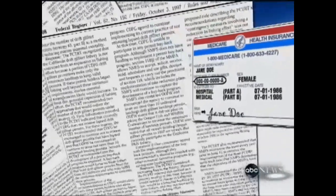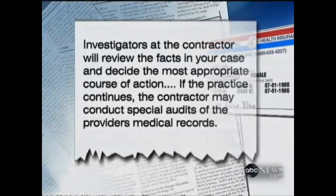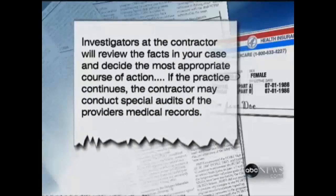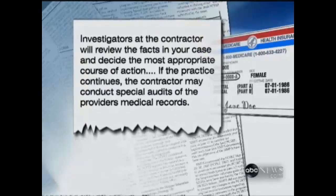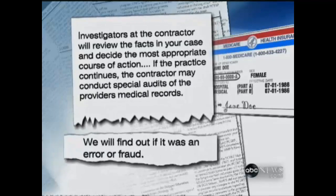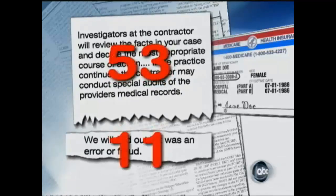The ABC News segment notes the problem has existed since the time of The Honeymooners, playing a clip of confusing tax language. It then illustrates what the new law means: a Medicare letter that previously said 'Investigators at the contractor will review the facts in your case and decide the most appropriate course of action — if the practice continues, the contractor may conduct special audits of the provider's medical records' now reads simply 'we will find out if it was an error or fraud' — 53 words reduced to 11. The reporter signs off with a humorous example of verbose language before simplifying to: John Berman, ABC News, New York.